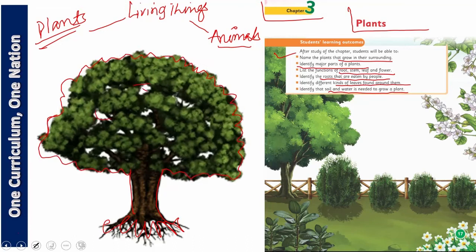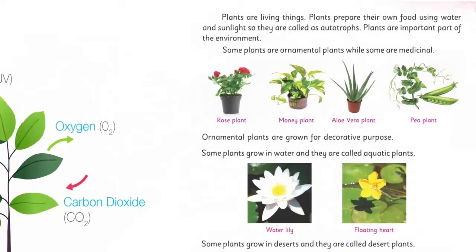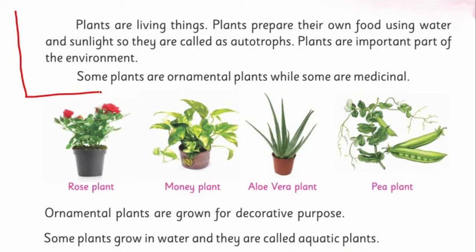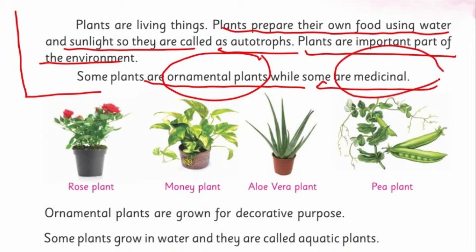Let's see how many advantages there are of plants. See the text and you will enjoy it. Plants are living things. Yes, plants are living things. Plants prepare their own food using water and sunlight, so they are called autotrophs. Plants are an important part of the environment. Some plants are ornamental plants while some are medicinal. Dear children, plants come in many types. Some plants give us fruit, some give us flowers, some plants are for ornamental purpose—we plant them in homes for beauty—and from some plants we also make medicine.